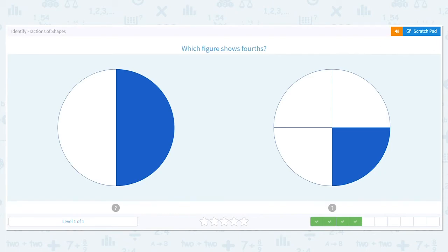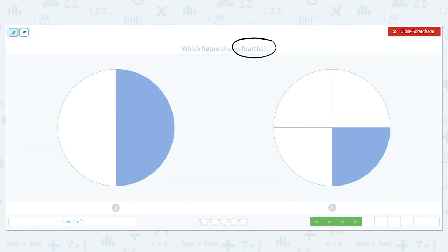This time we want fourths. And this is what I like about fractions for the most part. Your key word is right in the fraction. Four. So we want fourths. Which picture is broken up into four equal pieces? How many pieces are here? Two. So this is one half. How many total pieces are here? Four. So each piece here is one fourth.